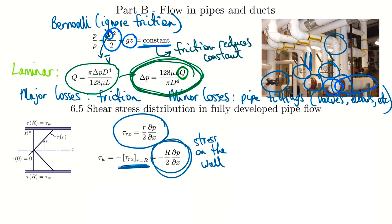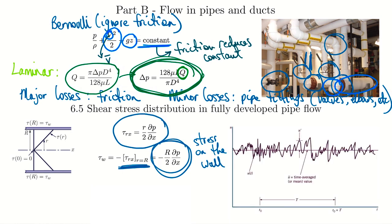That doesn't complete the picture, though — we can't get all friction losses just from wall shear, because a lot of friction is also from fluid particles rubbing against neighboring particles moving at different speeds. In a plot of velocity in turbulent flow, you see the actual velocity fluctuating over time, a flat time-averaged mean value, and a u-prime value representing the variation from the mean — a measure of how turbulent the flow is.